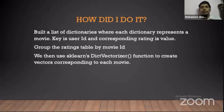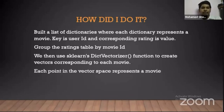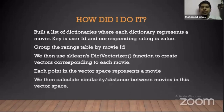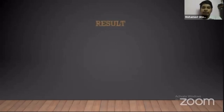I grouped them based on movie ID, then used scikit-learn's vectorizer function to vectorize the data — converting non-numerical data to numerical data. Each point in the vector space represents a movie. Then I find out which movies are most similar based on minimum distance, and I make recommendations based on that.